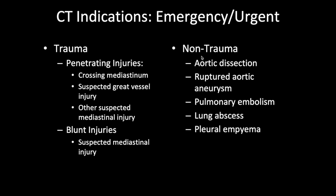The non-traumatic emergencies are predominantly vascular: suspected aortic dissection, suspected ruptured aortic aneurysm, and pulmonary embolism. Outside of the vascular tree, CT can help differentiate a lung abscess from an empyema on chest x-ray. This needs to be done urgently because lung abscesses are treated with antibiotics conservatively, while pleural empyemas are treated surgically by drainage with a chest tube.